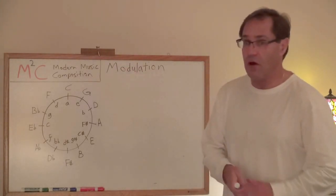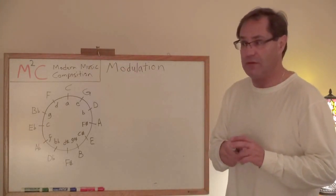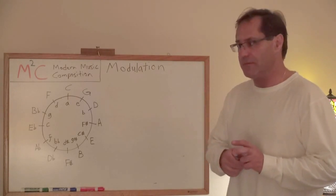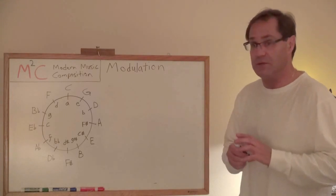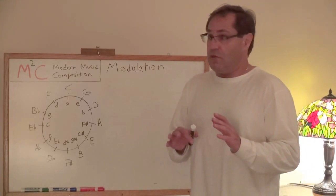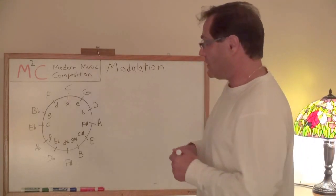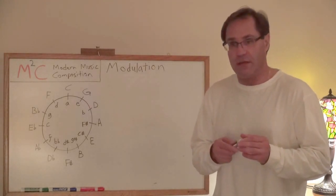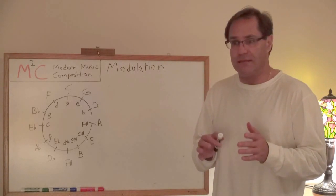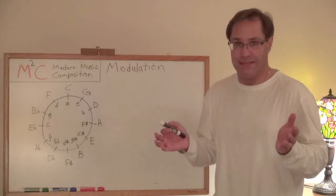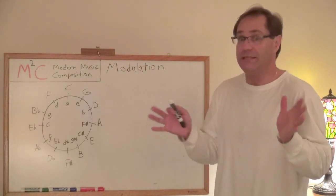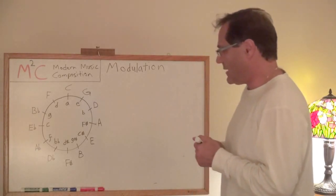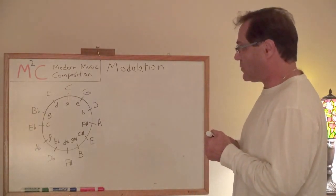However, the tritone is used all the time. I mentioned this before, I think, in a previous video. It's used all the time in atonal music. And in fact, Bela Bartok's music uses it extensively. And if you analyze Bartok's music, you'll see a lot of analysis is done with what's called the axis system. What is the axis system? Well, I'm going to just briefly mention that right now. Now's a good time to do it because it's pretty cool.